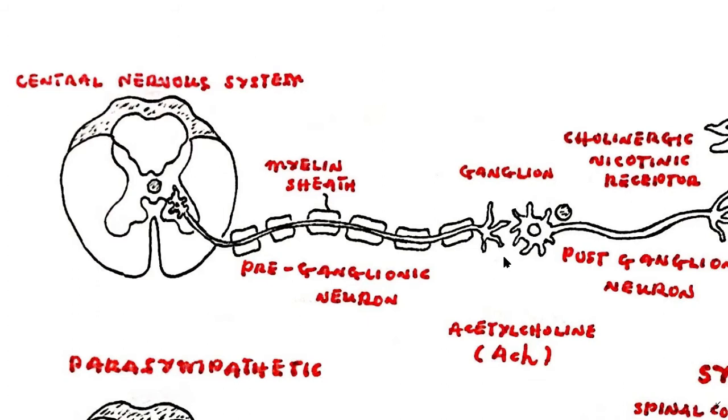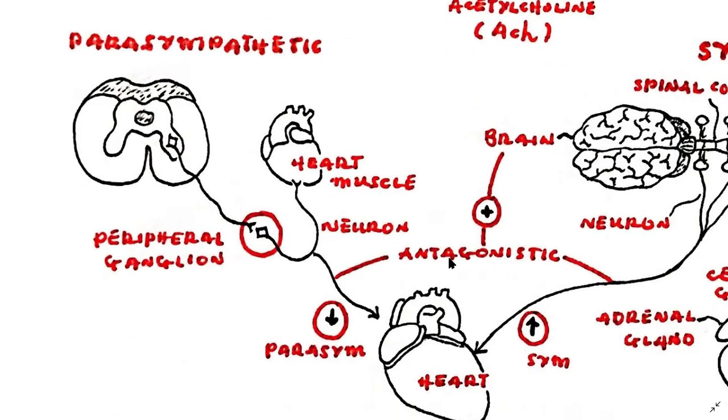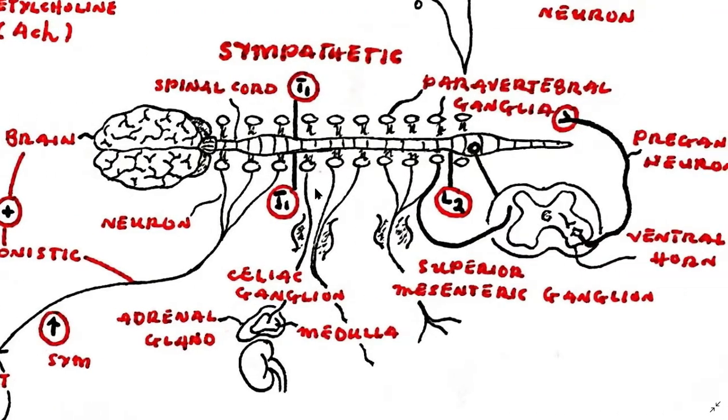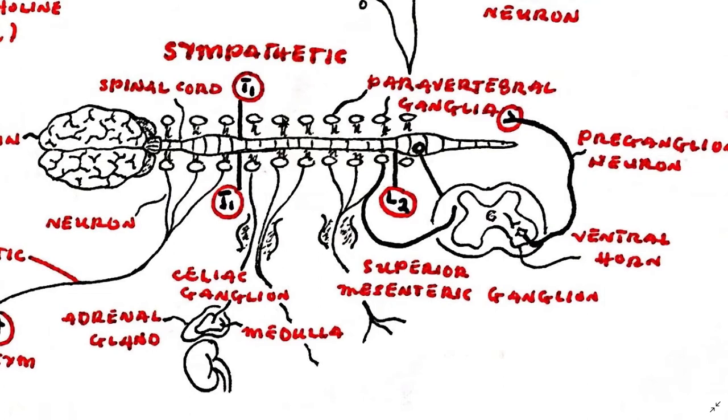Parasympathetic peripheral ganglia are generally found close to or in the target organ, whereas sympathetic ganglia are largely located in either the two sympathetic chains on either side of the vertebral column, known as the paravertebral ganglia, or in the fused pre-vertebral ganglia of the visceral plexuses in the abdomen and pelvis.